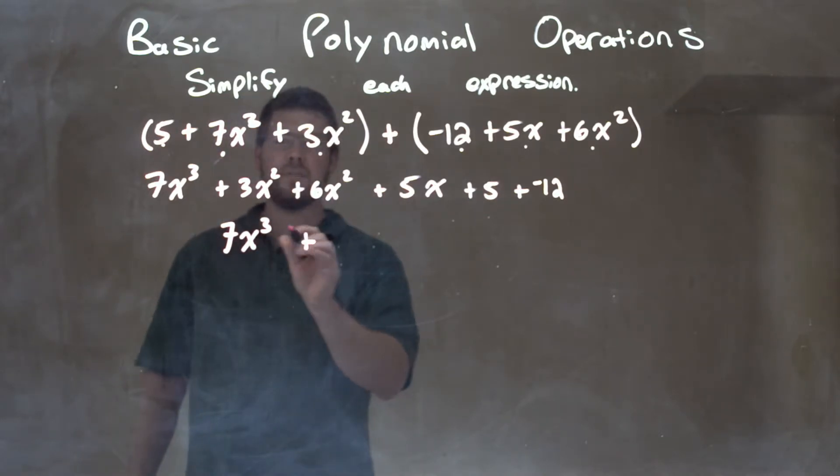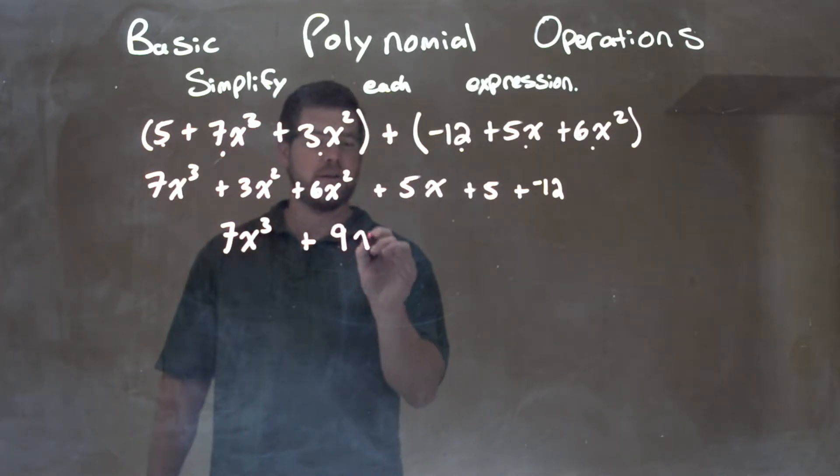Now with the x squares, we have 3x squared and 6x squared. We combine that together to be a 9x squared. Got those.